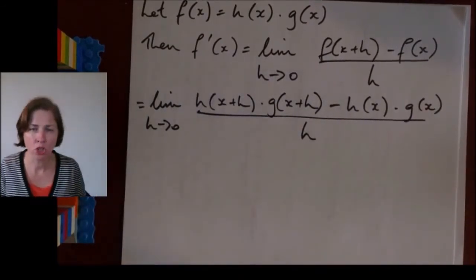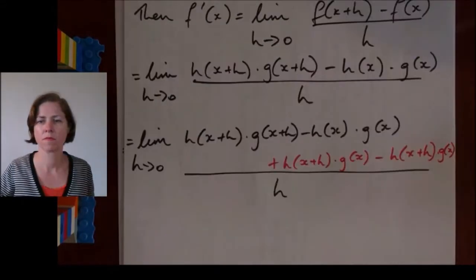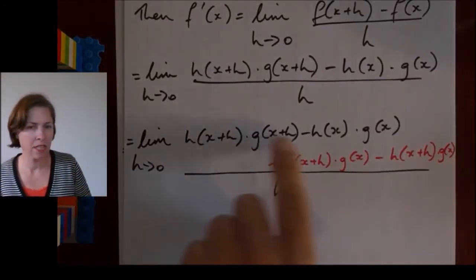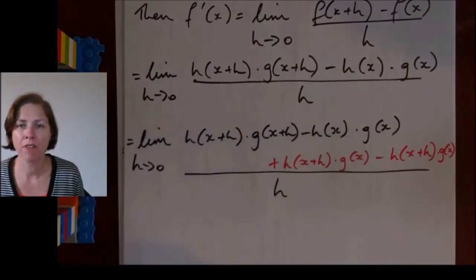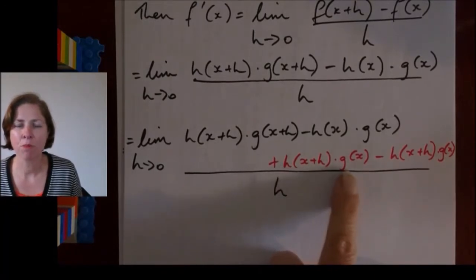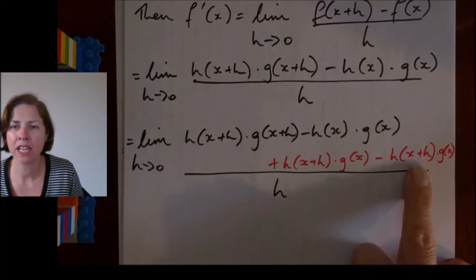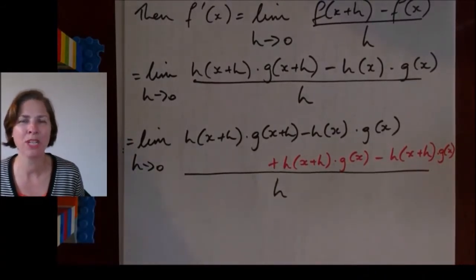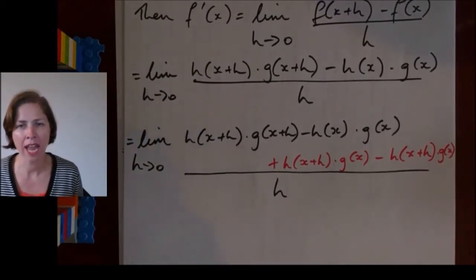In my next line I'm going to do a little trick. I always call it a trick when it's the thing we only do because we know it's going to make things work out. What I've done is kept the first line of working the same as the line above, but then added the expression h(x+h)·g(x) minus h(x+h)·g(x) - which equals zero, so it doesn't change anything.